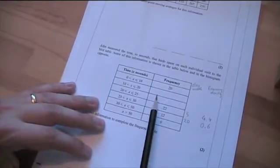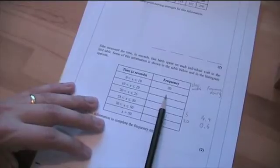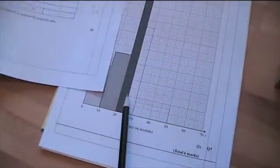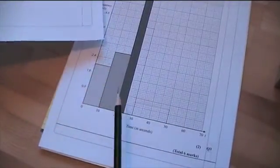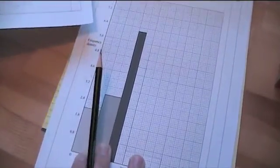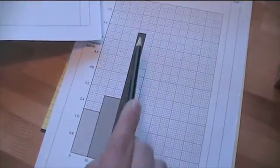Last thing we need to do. Now, our histogram is complete. We need to fill in these missing frequencies. A frequency is the area of your bar. To do the area of a rectangle, we do the base times by the height.